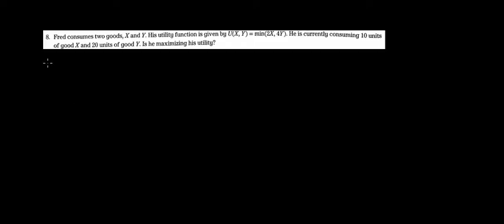Let's work with question 8 now. Here we have a different utility function, so it's good for the diversity. We have the utility given as the minimum between these two, and we have that we are consuming 10 units of X and 20 units of Y. Are we maximizing utility or not?